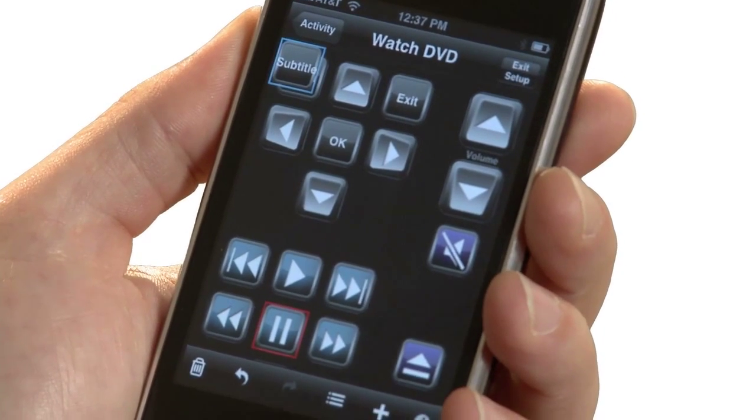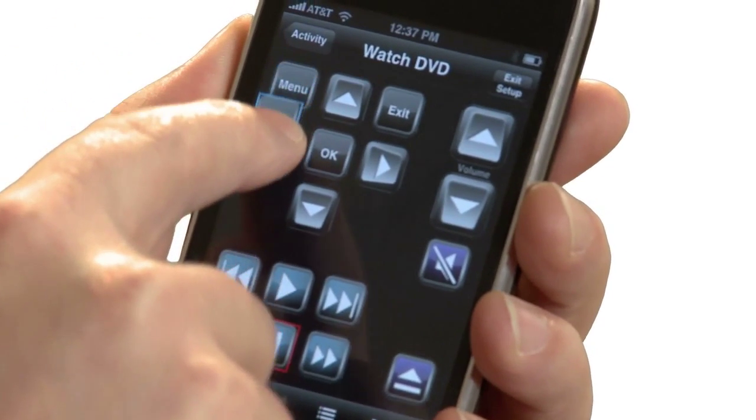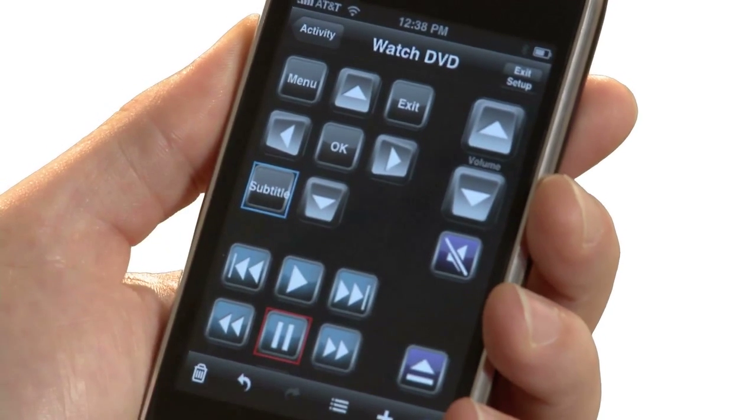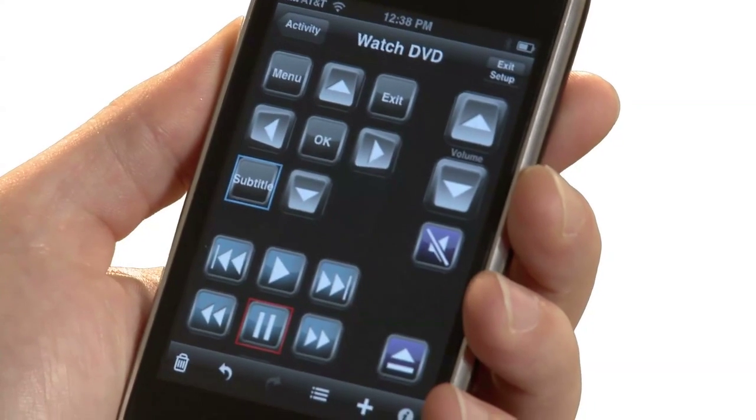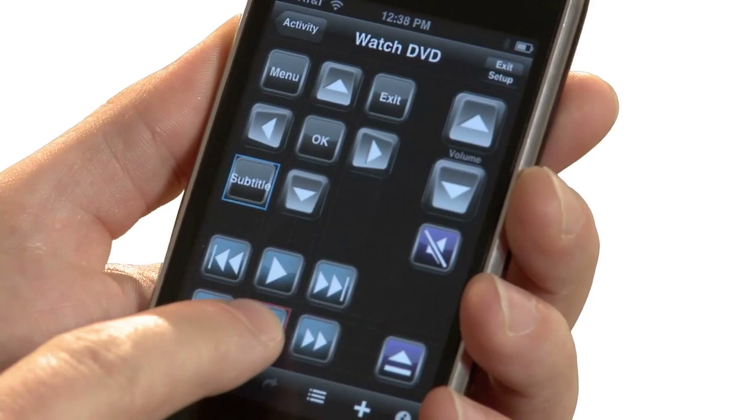Move the button into position. RedEye will help you align the button with others on your screen. When a button appears with a red outline, RedEye is telling you that it could not find an appropriate command for that button. You can choose a command by tapping on the button details icon.